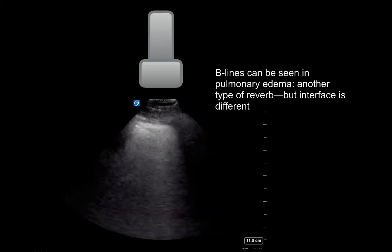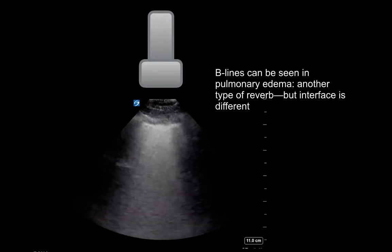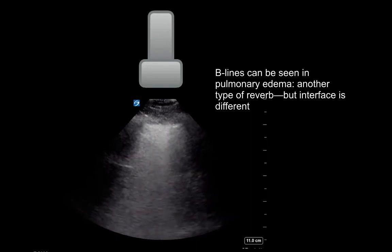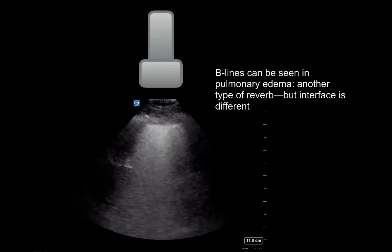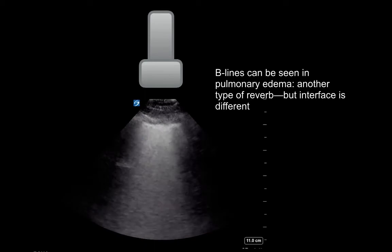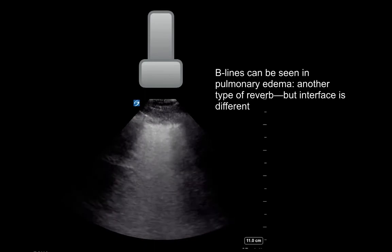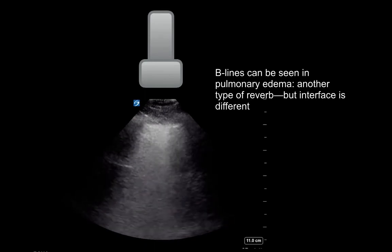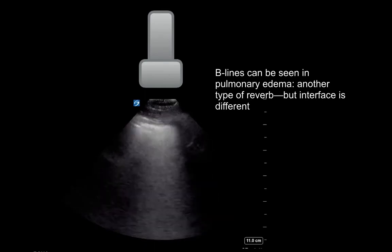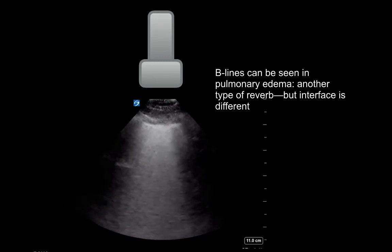Other scenarios that can generate reverberation artifacts, which can also be called ring-down artifacts, are generated by strong reflectors such as gas collections in the body like free intraperitoneal air, and metallic foreign bodies like needles, staples, and shrapnel.